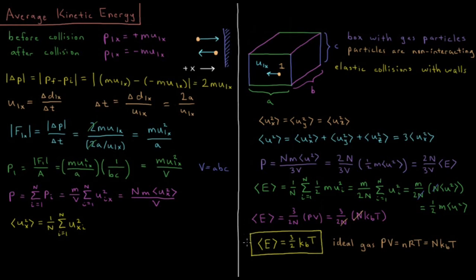This is an interesting result because it's the exact same result as the translational energy of an ideal gas from statistical mechanics, where it was derived from the energy levels of the particle-in-a-box model using the partition function. Here we simply assumed elastic collisions with the walls and no interaction between particles — and both approaches give the same result. In the next video, we'll take this average kinetic energy and go one step further to look at the average velocity of these gas particles.